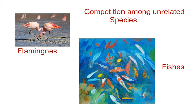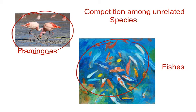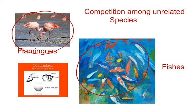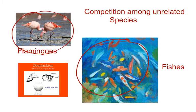Unrelated species could also compete for the same resource, like interspecific competition. For instance, in some shallow South American lakes, visiting flamingos and resident fishes compete for their common food. The common food is zooplankton, like cladocerans, copepods, and rotifers — said to be the common food of both flamingos as well as fishes.